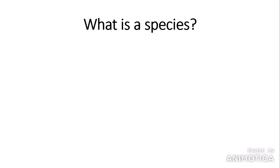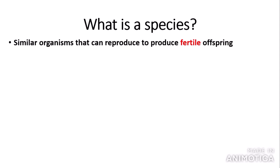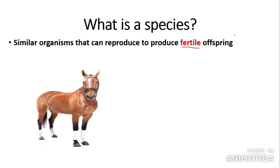So what is meant by species? A species is basically similar organisms — organisms with similar features that can reproduce to produce fertile offspring. The key term here is 'fertile.' So here we have a horse that has been produced by two organisms of the same species — two horses — so this horse is fertile.